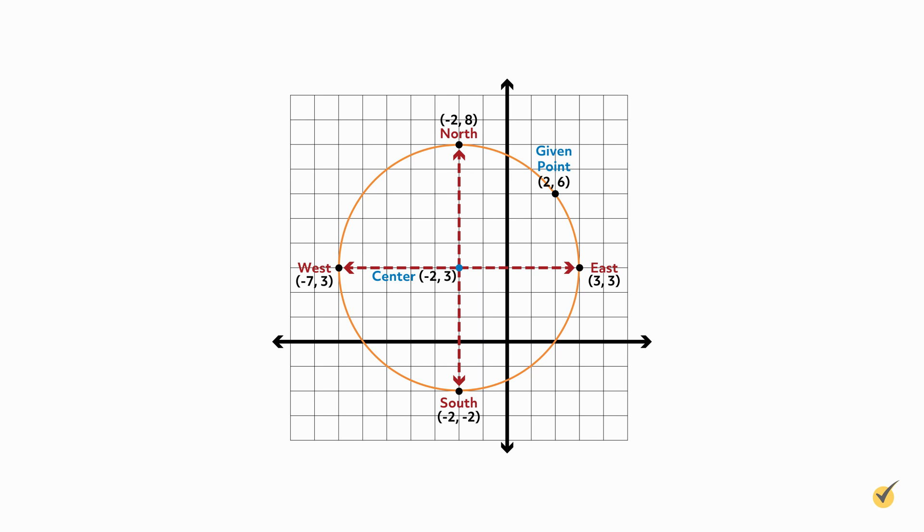And we're not done yet. We can find even more points if we want, since the given point isn't one of our four compass points. If we look to see how far over and up that point is from the center, we can find more points that are the same L-shaped distance away. Here we can see that (2, 6) is 4 units to the right and 3 units up from the center of the circle. So I can draw L shapes from the center that move 4 units left or right, and then 3 units up and down to find more points. We found 3 more. On the left or west side, we found (-6, 6) and (-6, 0). And below our given point, we found (2, 0). Altogether we now have 8 points on our circle, including the given one.